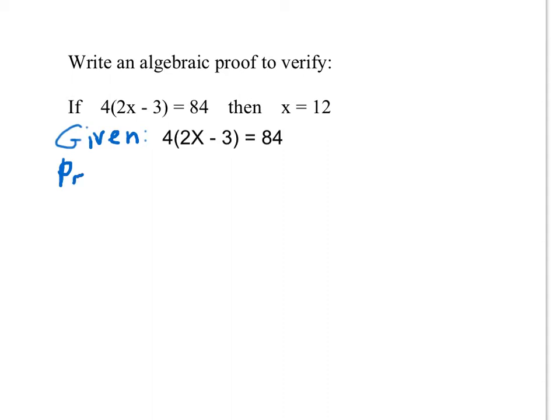Next we'll write down the prove, you're writing this on your paper. The prove is the conclusion of the if-then statement, the then part of the if-then statement. And so we're going to prove that x equals 12. So we've written down the given and the proof of the algebraic proof.